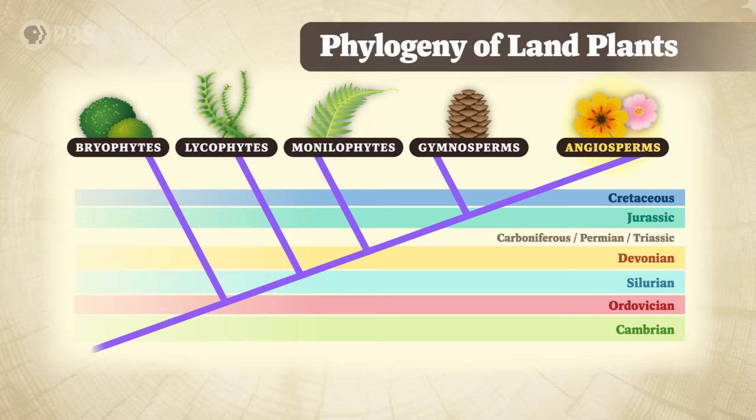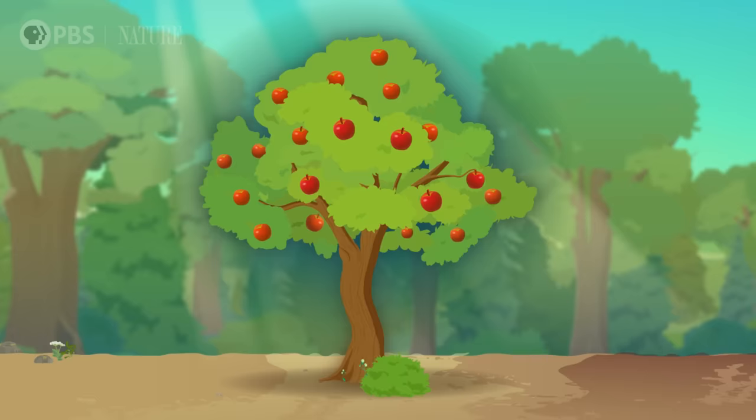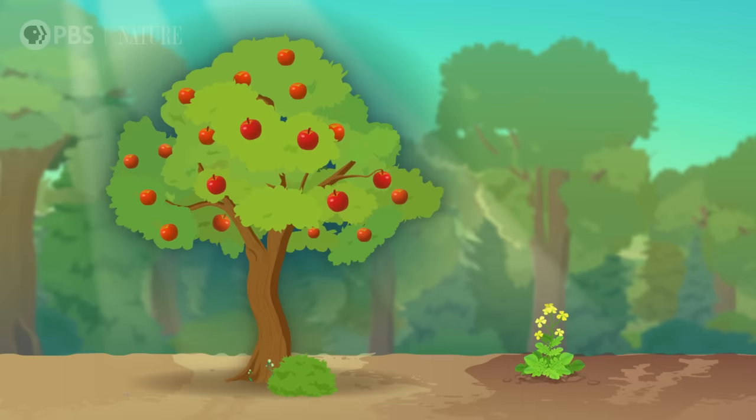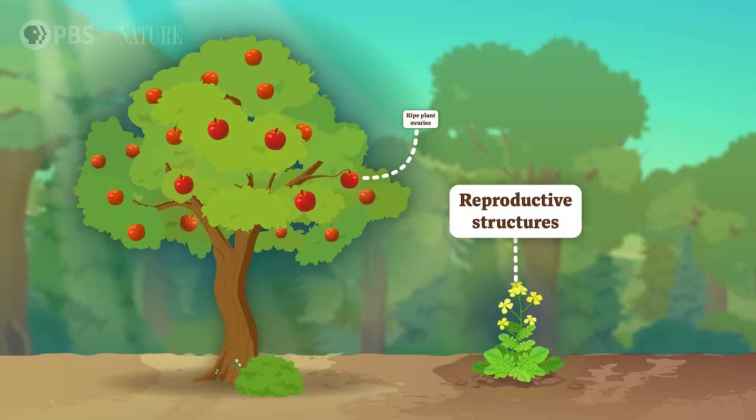Now let's visit the next branch on the plant family tree: the angiosperms. They appeared about 85 million years after the gymnosperms, or around 275 million years ago. Angiosperm means vessel seed, because their seeds are enclosed in a special container or vessel — a plant ovary, or reproductive organ — and when it ripens, it becomes a fruit. The ovary is part of a broader reproductive structure completely unique to angiosperms: the flower. To repeat: flowers are reproductive structures, and fruit are ripe plant ovaries. Beautiful and tasty. Flowers and fruits helped the angiosperms reach a level of evolutionary success and ecological dominance that hasn't been repeated in the history of plants.